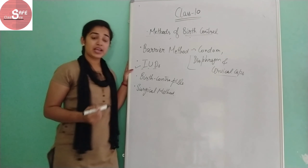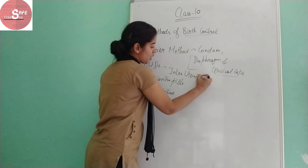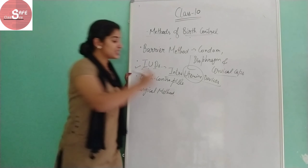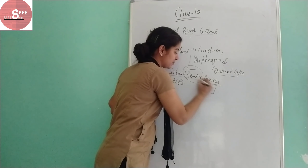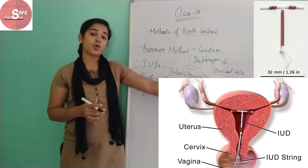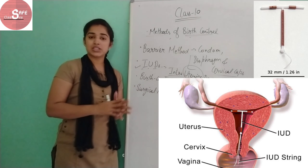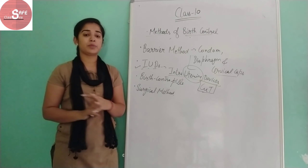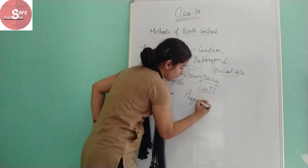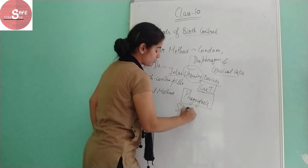The next method is IUDs — Intra-Uterine Devices. Intra stands for inside, uterine refers to the uterus, and D stands for devices. An example of an IUD is the Copper T, which is inserted into the uterus of the female body through the vagina. There are copper-releasing IUDs and hormone-releasing IUDs. These IUDs make the uterus unsuitable for implantation and also cause phagocytosis of the sperm.